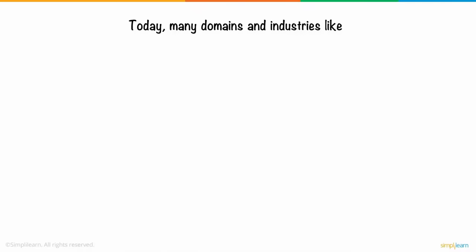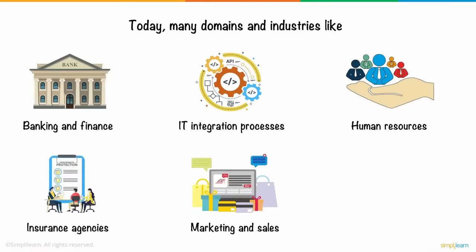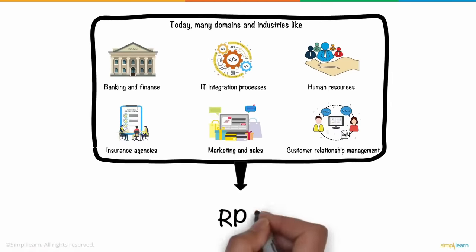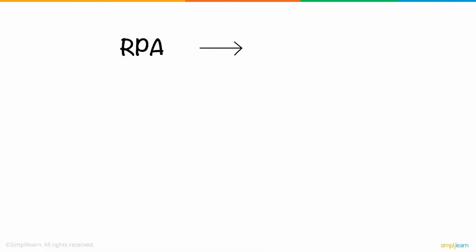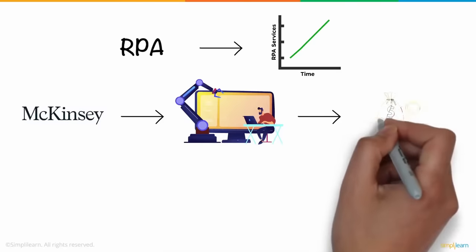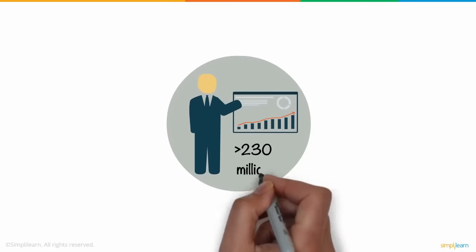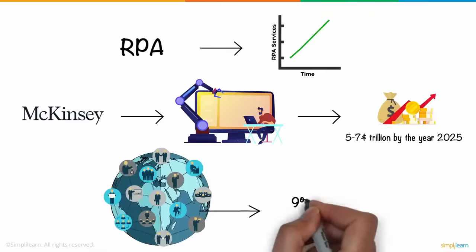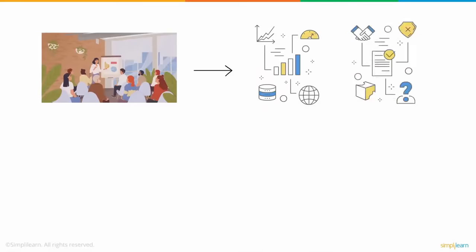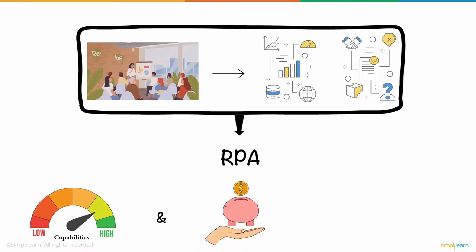Today, many domains and industries like banking and finance, IT integration processes, human resources, insurance agencies, marketing and sales, and customer relationship management readily deploy RPA. RPA service adoption has been showing tremendous growth since 2016 and will continue to increase beyond 2020. According to McKinsey's research, knowledge and work automation could have an economic impact of 5 to 7 trillion dollars by the year 2025, impacting more than 230 million knowledge workers — 9% of the global workforce. Any company which is labor-intensive and performs high-volume, high-transaction functions stands to benefit the most, boosting capabilities and saving money and time.